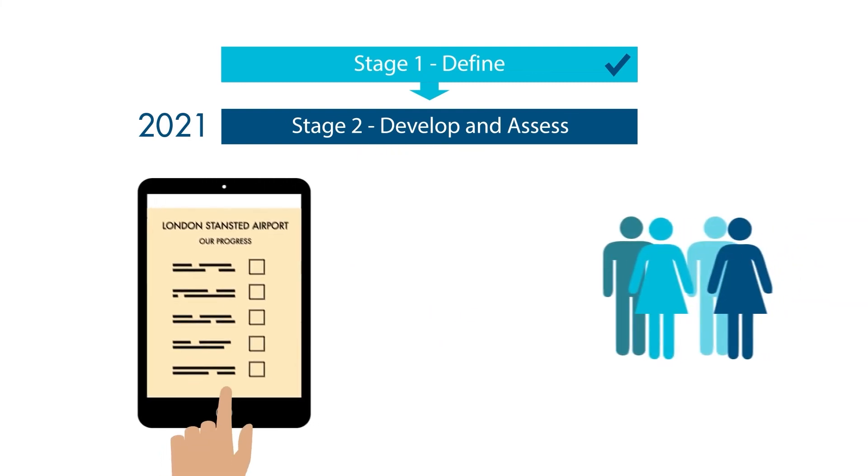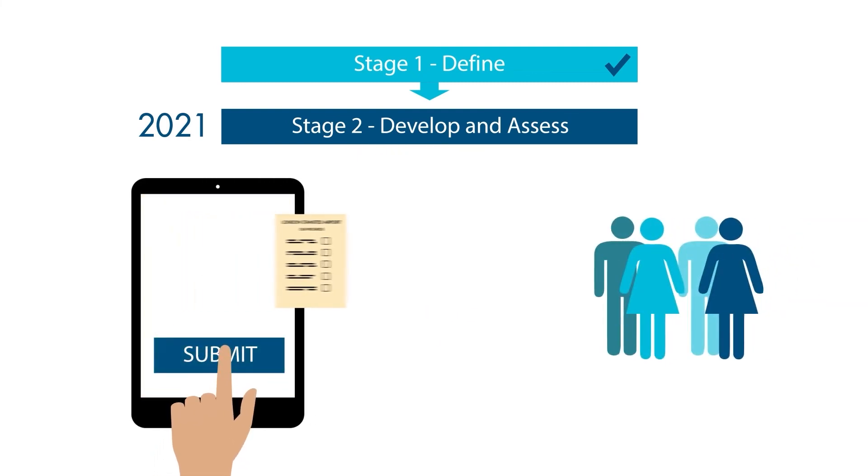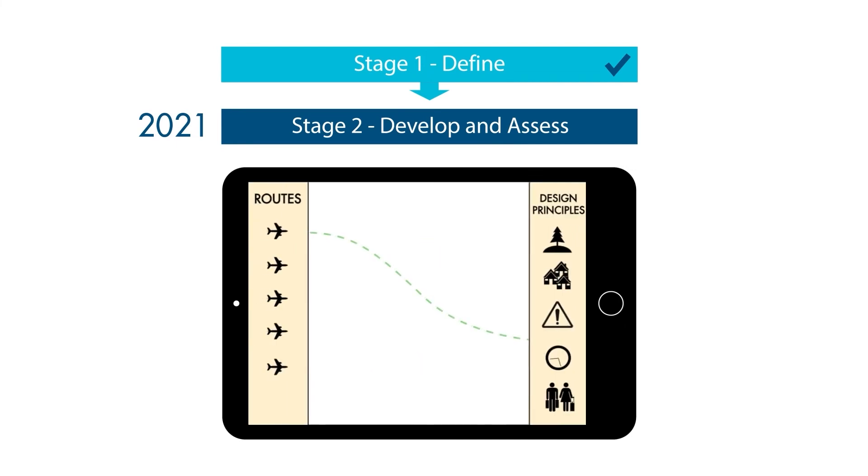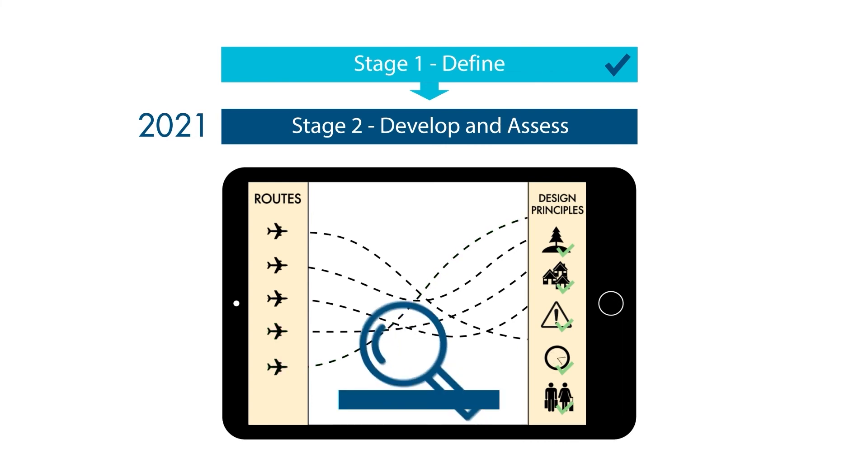Two rounds of stakeholder engagement were held to share our progress and gather feedback and input into the development of the options. At Stage 2, route options were evaluated against the design principles developed and agreed in Stage 1 to give a clear picture of how each option responded to each of the design principles. In addition, an initial assessment of the likely impacts of each potential route option was completed.